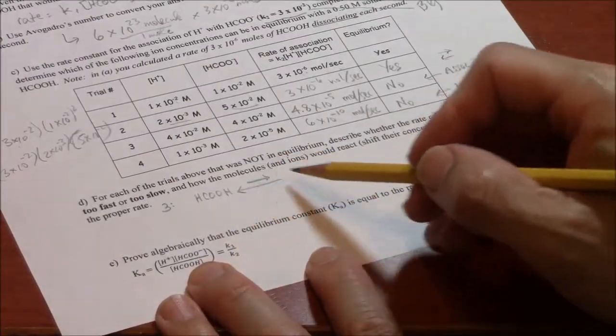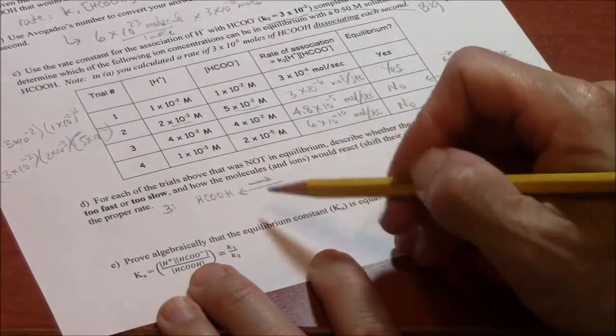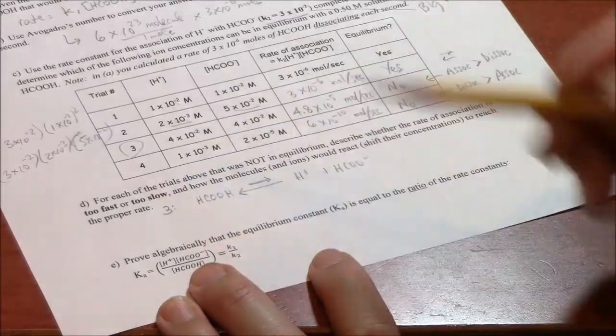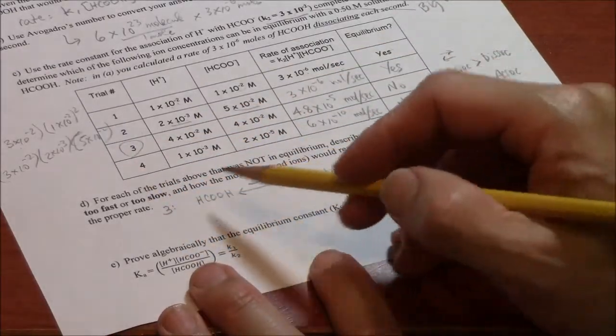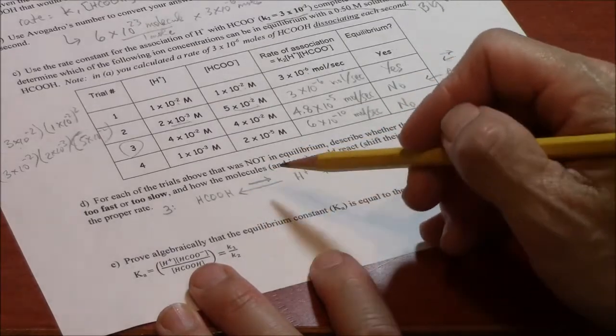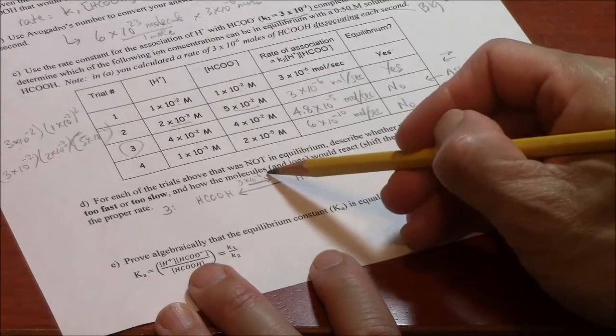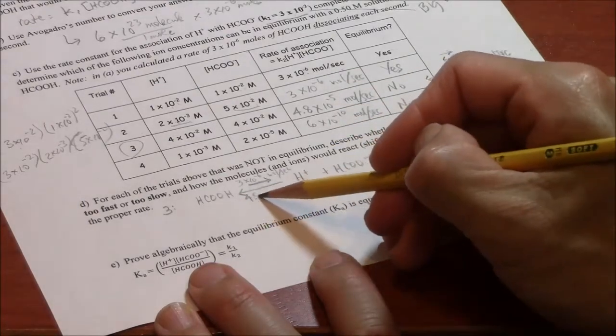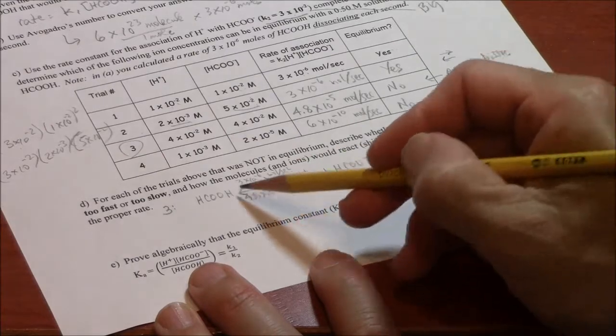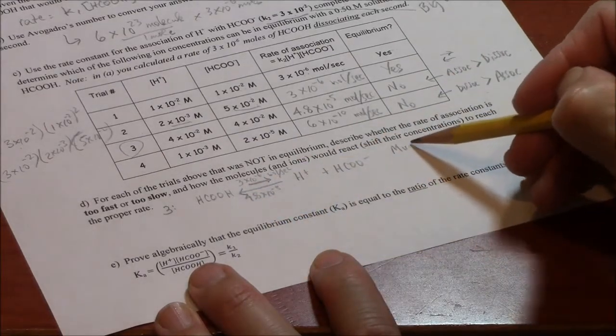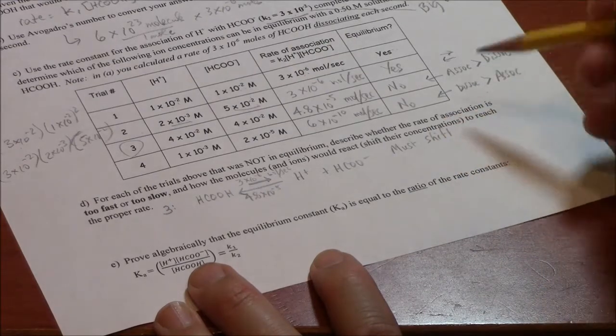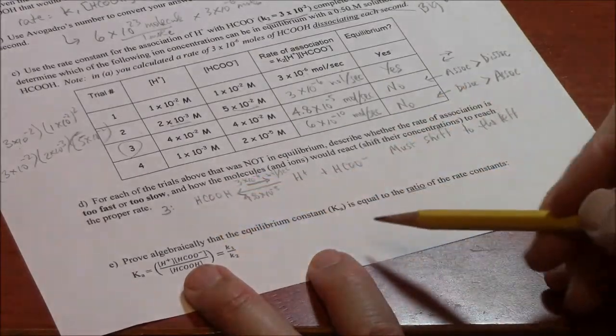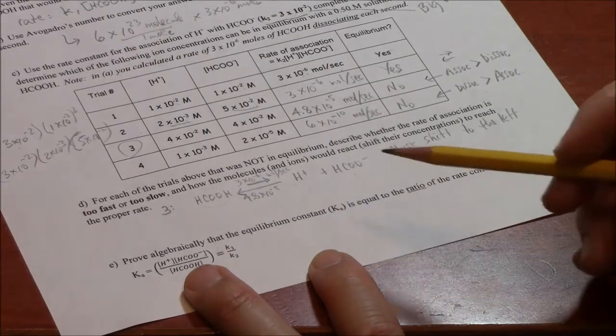Here on the bottom of the page, I'm using my same arrow technology I showed you before. We have numbers for the association and dissociation rate in line 3. Line 3, the dissociation rate is 3 times 10 to the minus 6 moles per second. And the association rate is 4.8 times 10 to the minus 5, which is a bigger value. And that's why I've drawn a bigger arrow going to the left. So this one must shift to the left. The arrows tell you that. The numbers tell you that. So that more formic acid will form, less ions will exist. That's how it will reach equilibrium.